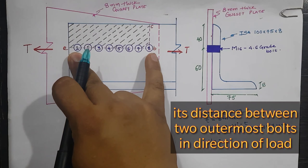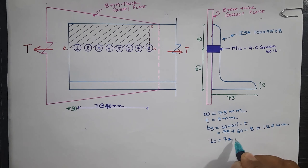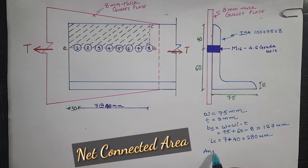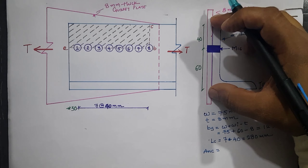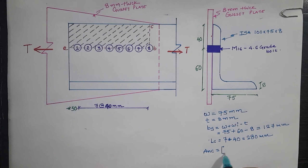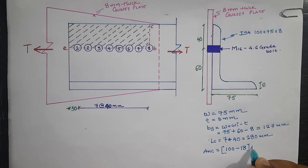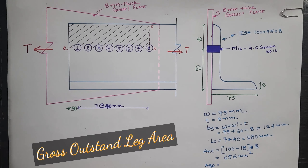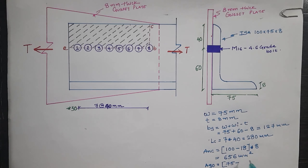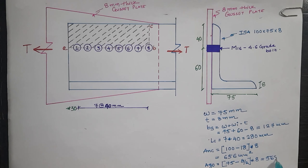The distance between the first and eighth bolt is 7 × pitch = 7 × 40 = 280 mm, so Lc = 280 mm. The net connected area Anc: the connected leg is 100 mm with one 16 mm bolt hole deducted (18 mm hole diameter), so Anc = (100 − 18) × 8 = 656 mm². The gross outstanding area Ago = (75 − 8/2) × 8 = 568 mm².